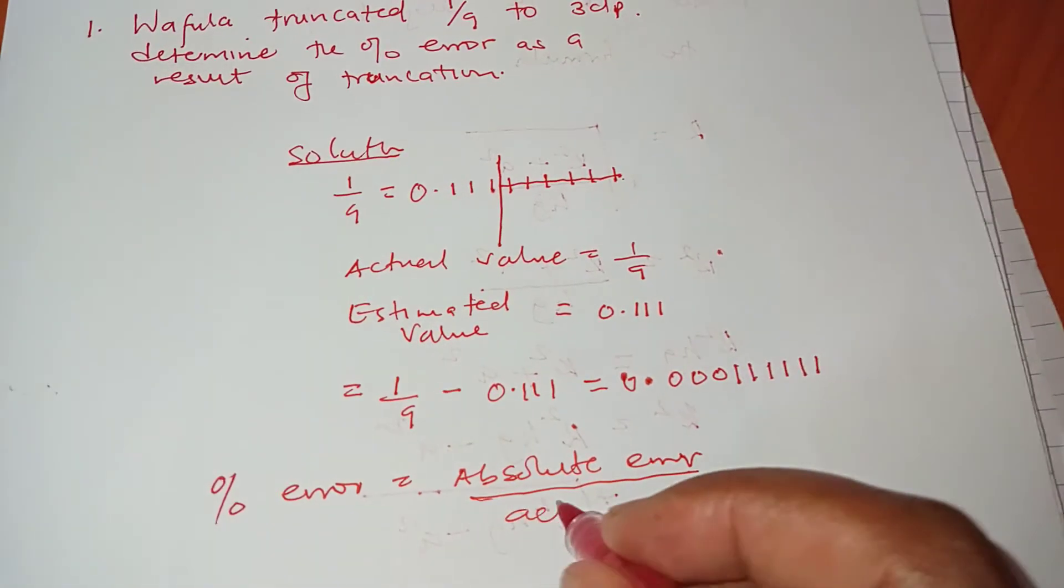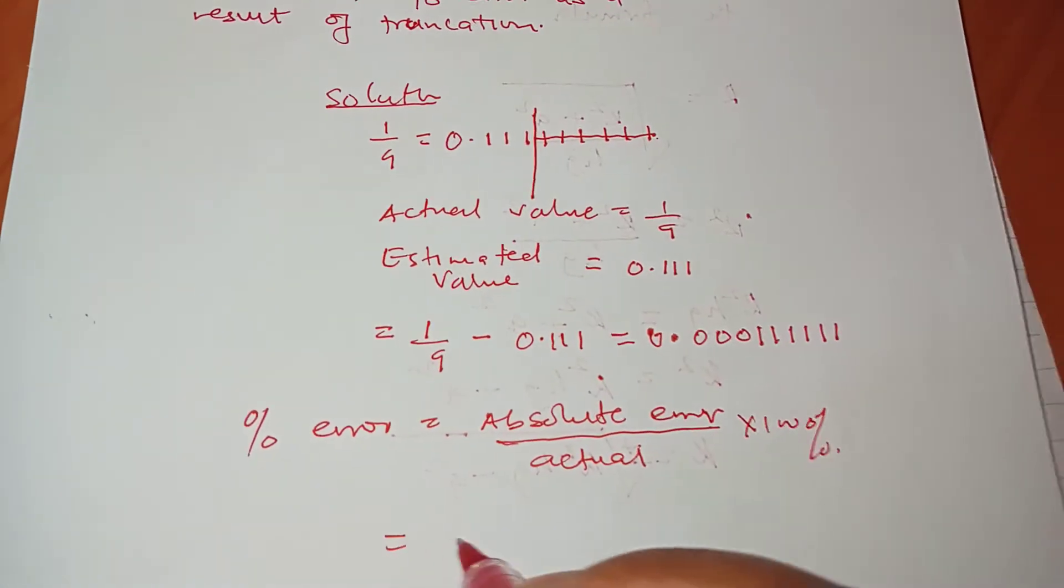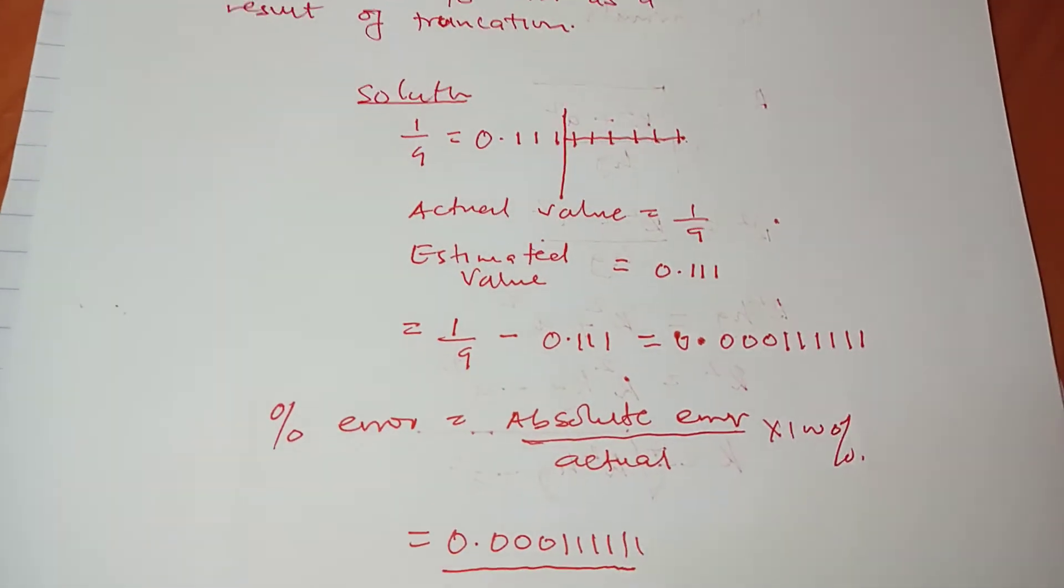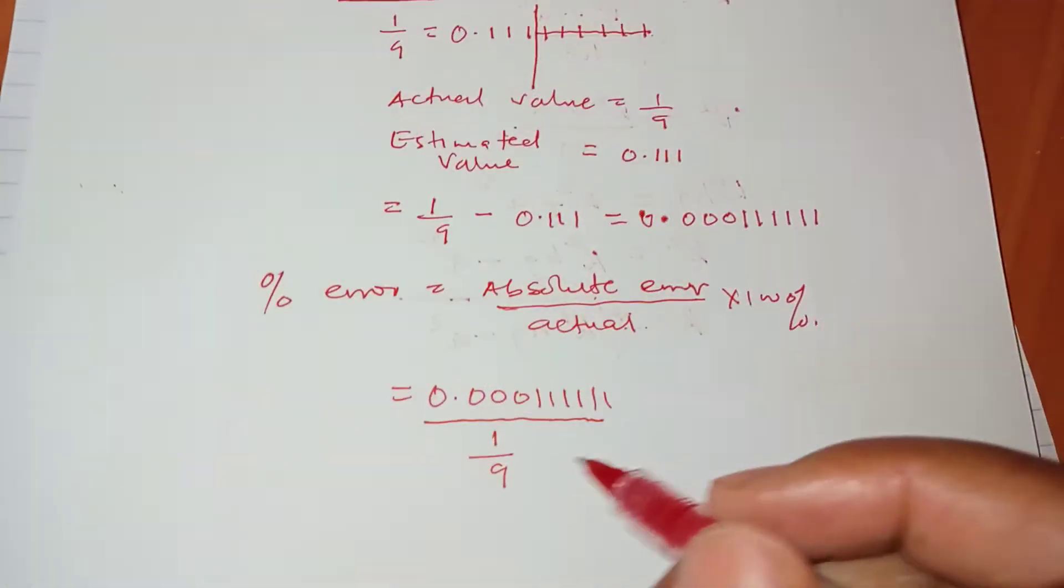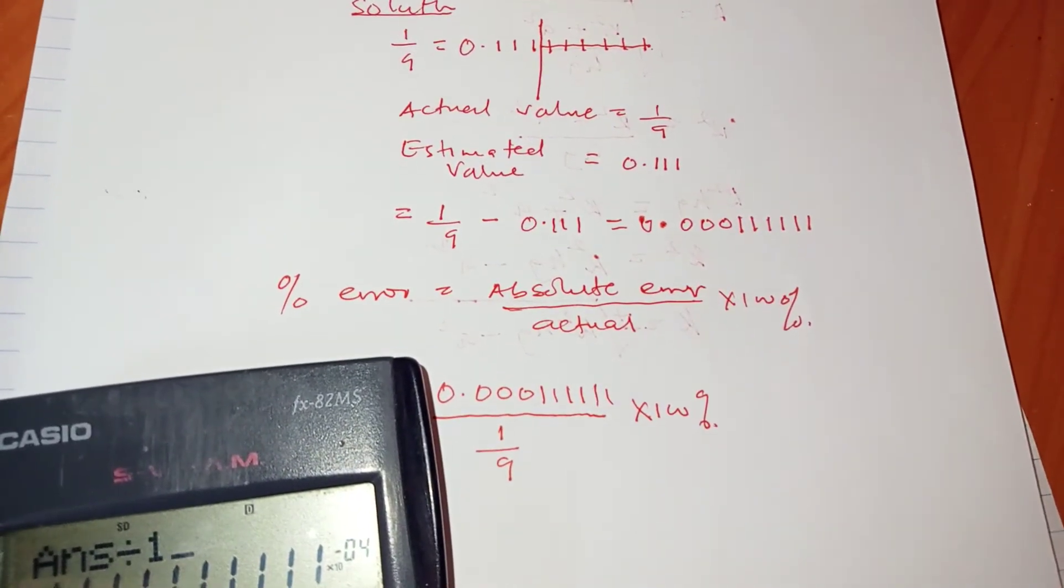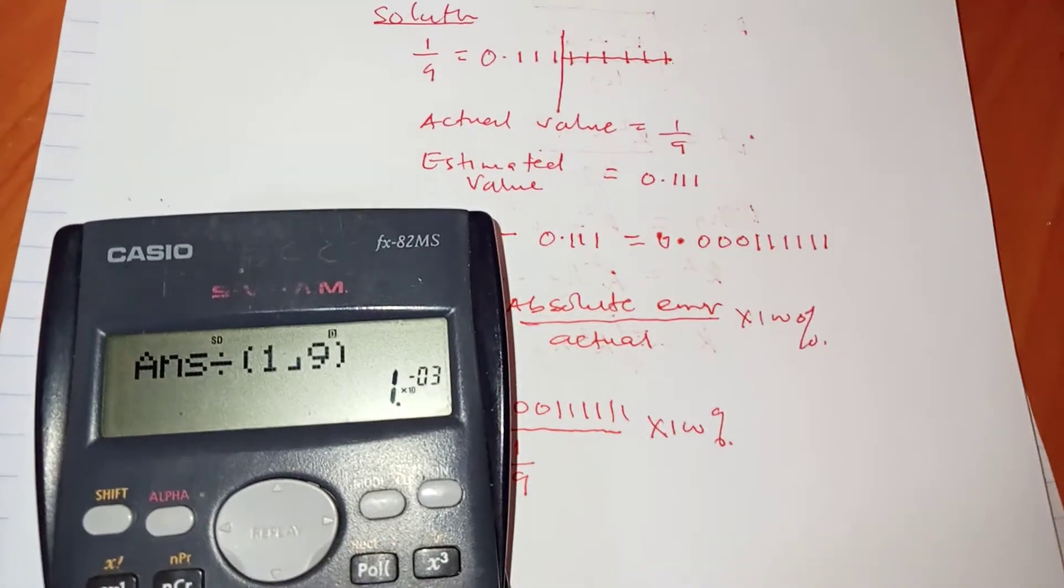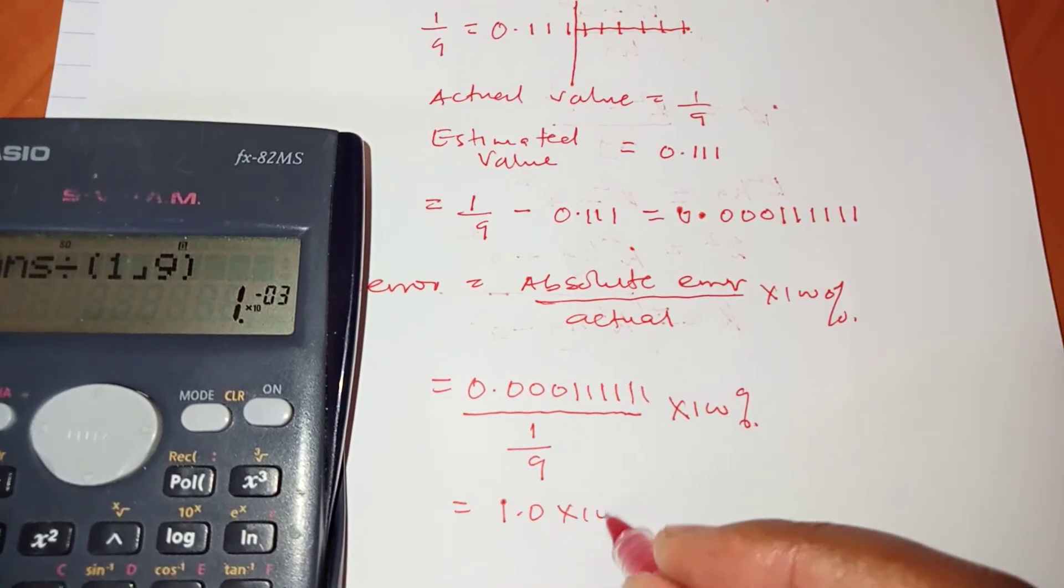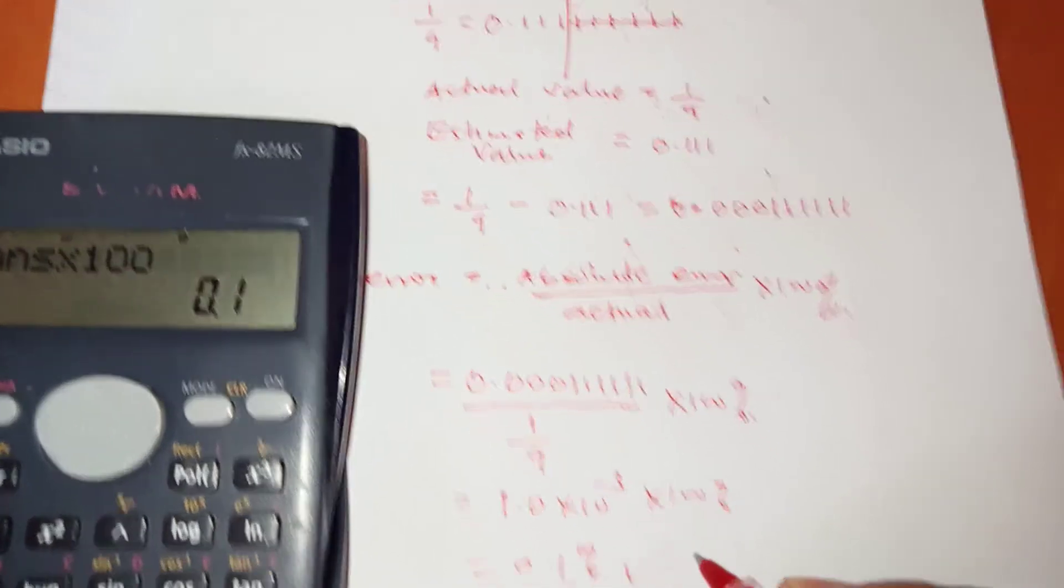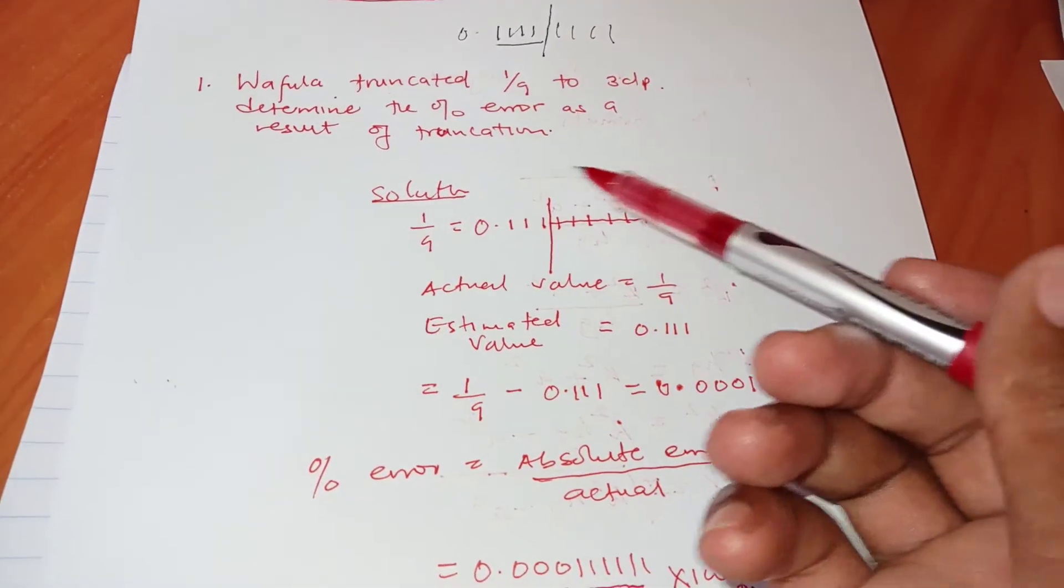What's then the percentage error? You know percentage error is given by absolute error over the actual value times a hundred percent. So our absolute error will be 0.00011111 and so on, divide by the actual value that's 1 over 9, then you multiply by a hundred percent. This is going to give us the percentage error. So you take that, divide by 1 over 9, and we're going to get that answer here before we multiply by 100 is 1.0 times 10 to the power minus 3 times a hundred percent to give us 0.1 percent.